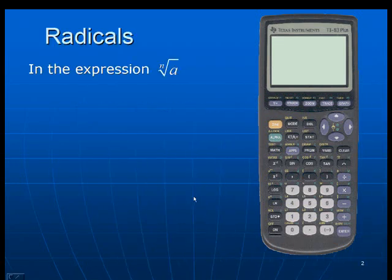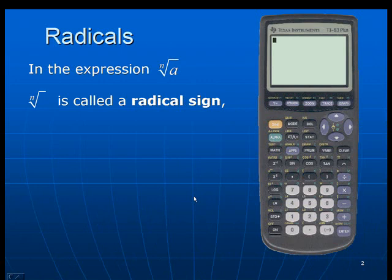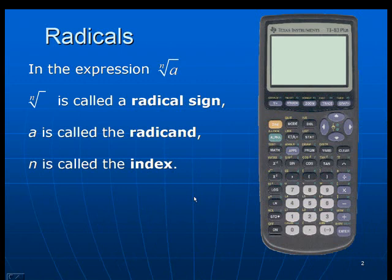Radicals. In the expression the nth root of a, the nth root is called the radical sign, a is called the radicand, and n is called the index.